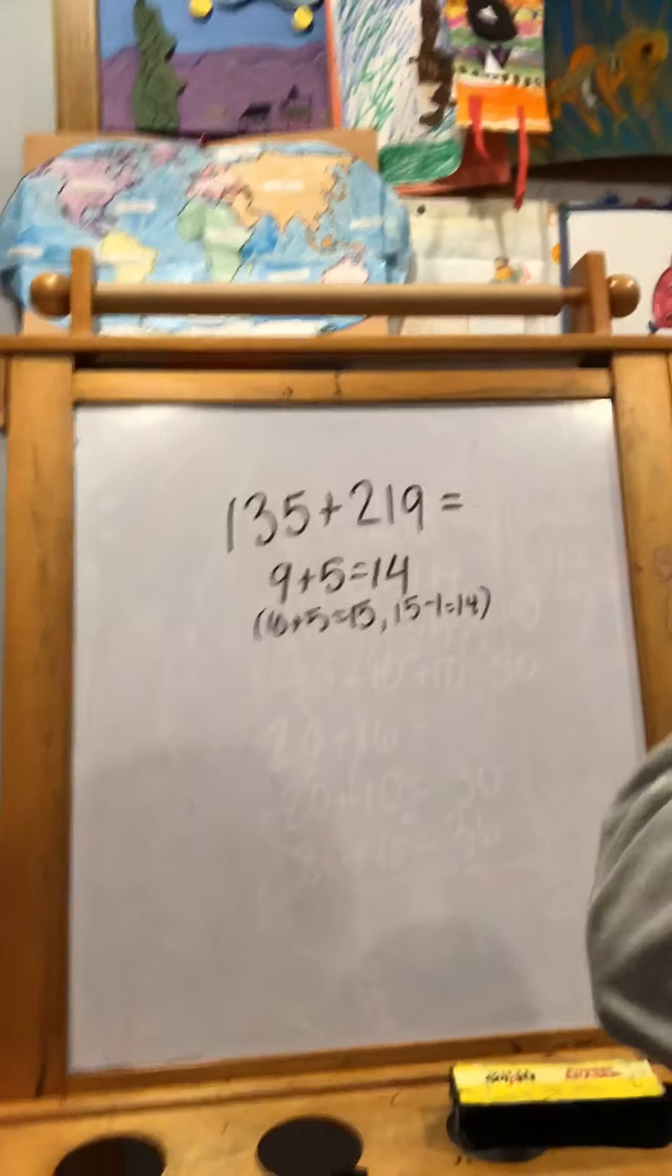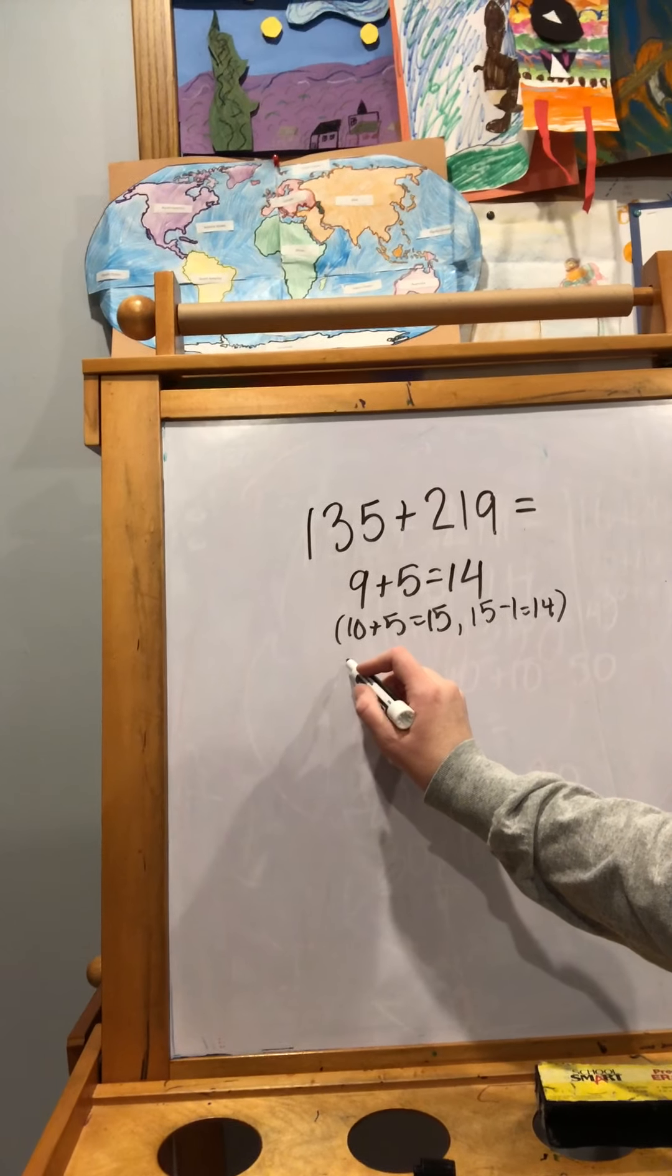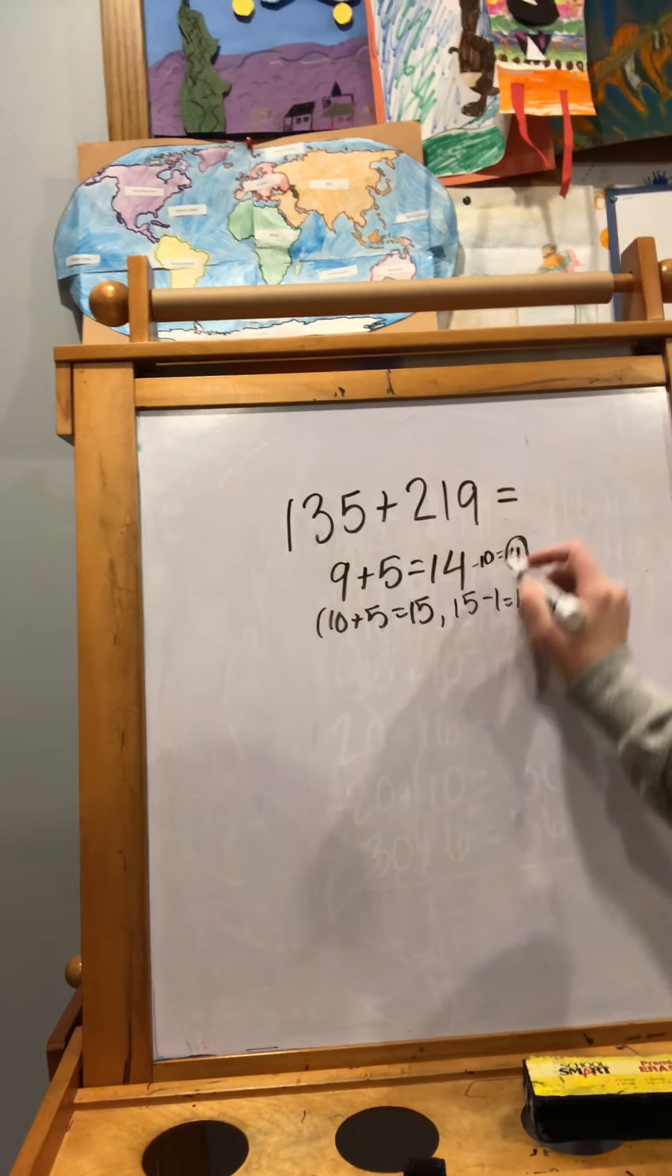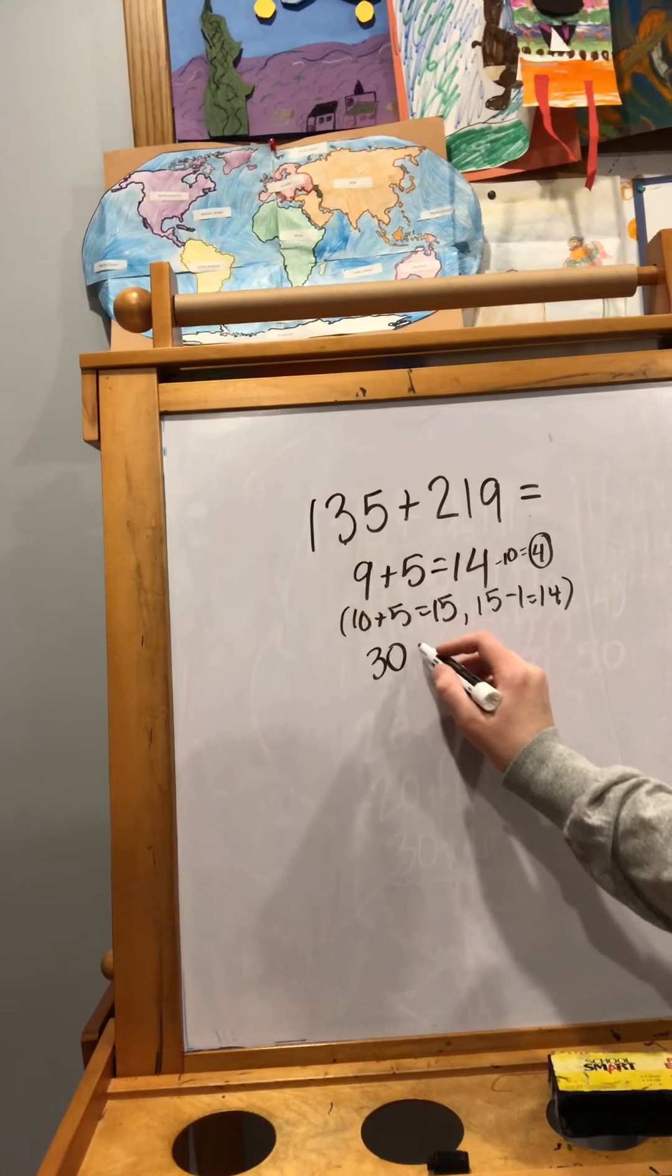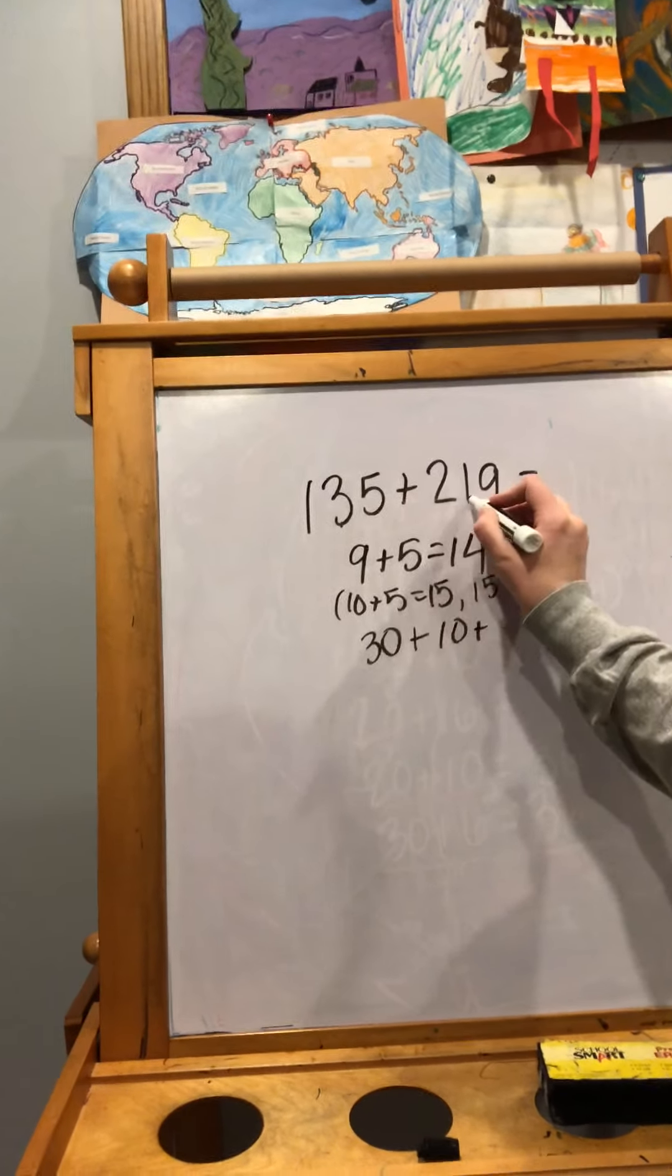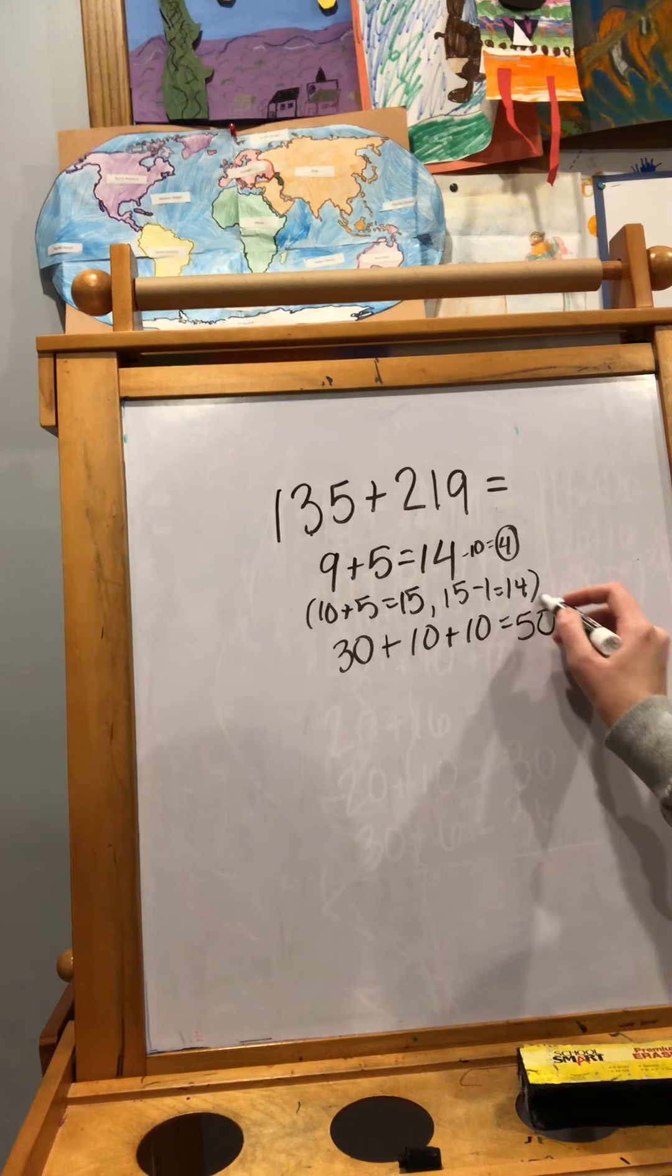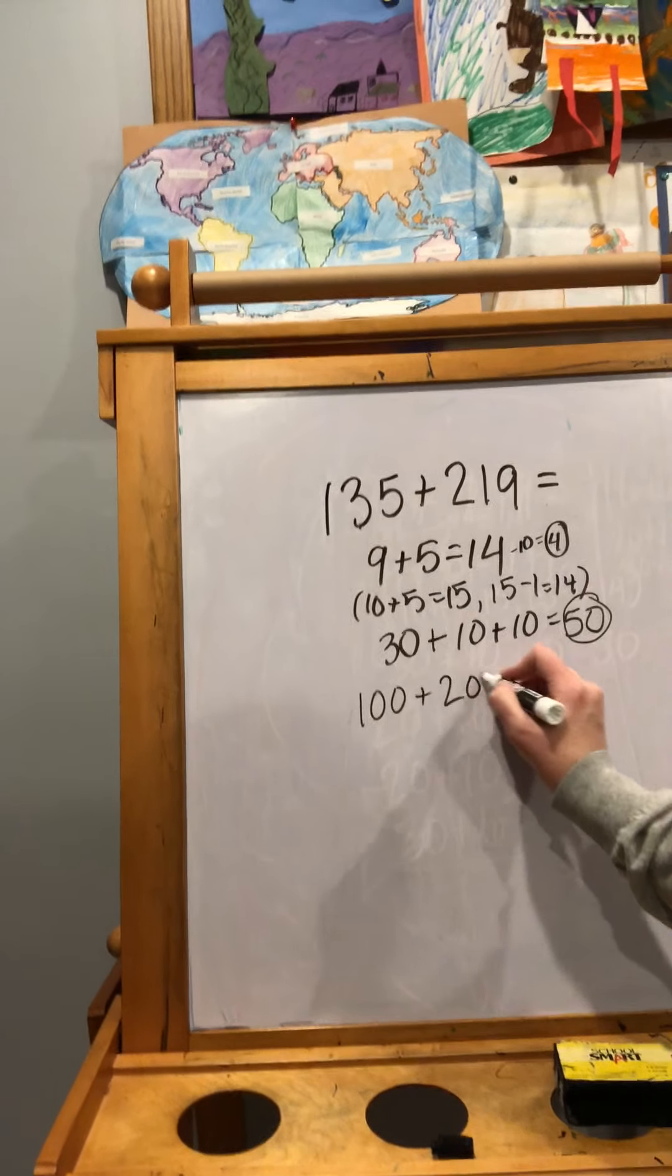Then I did 30. No, I took a 10 away from the 14 and put it into the 30. And I did 30 plus 10 plus 10 equals 50. Then I added 100 plus 200 equals 300.